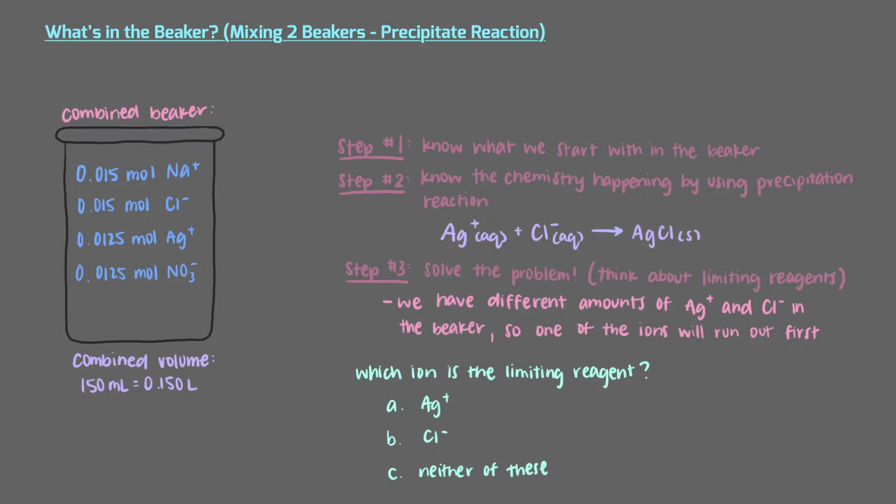We need one silver ion and one chloride ion to come together to form silver chloride. This means that they come together in a one-to-one ratio. The limiting reagent is the one that runs out first, so it will be the species that we have less of. We only have 0.0125 moles of silver ions compared to 0.015 moles of chloride ions, so silver is our limiting reagent and is consumed completely.